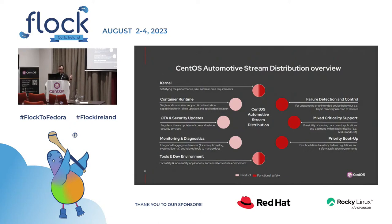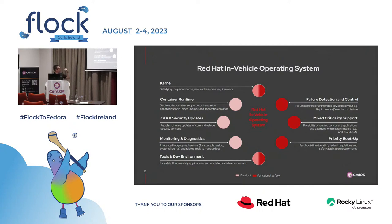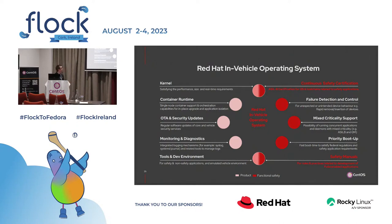On priority boot-up, we've been putting in a lot of effort trying to optimize our boot, because there's an expectation in automotive to boot really quickly — often people talk about two, three, or four second boot for different services. And then there's Red Hat in-Vehicle Operating System, which obviously has all these features, but then has certain additional things on top. If you want the certified version, that's Red Hat in-Vehicle Operating System, and you also get safety manuals and documentation.